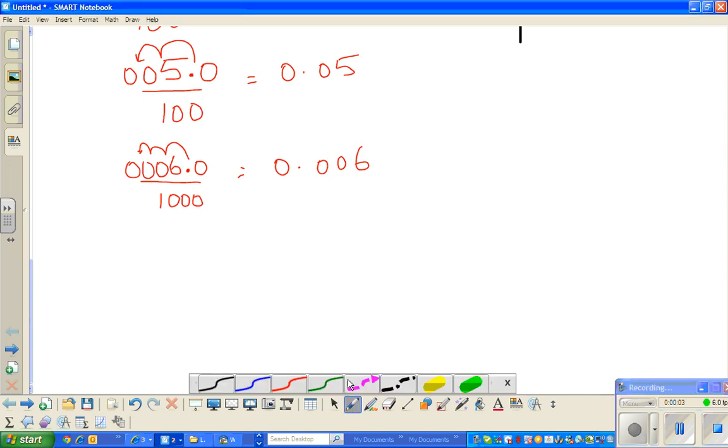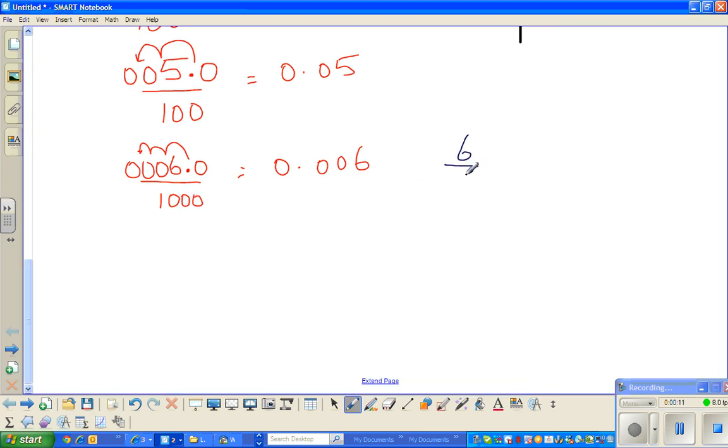Continuing from my last video where we stopped here and we said that 6 divided by 1000 gives you 0.006. So now let us focus only on hundreds. I showed this only to show you how the decimal point moves, or the number moves, whichever way you see.